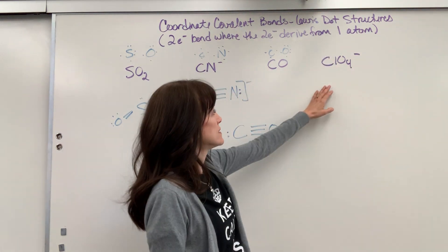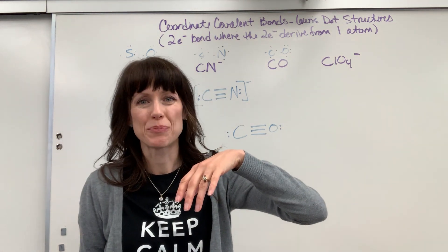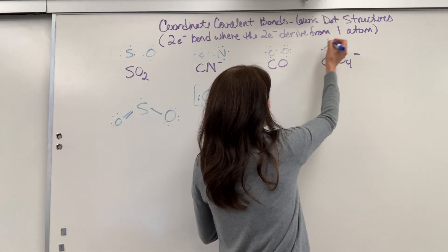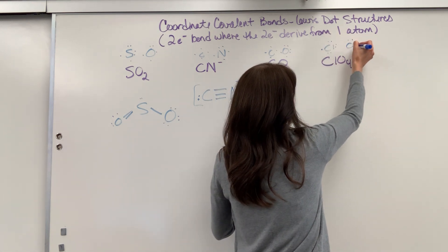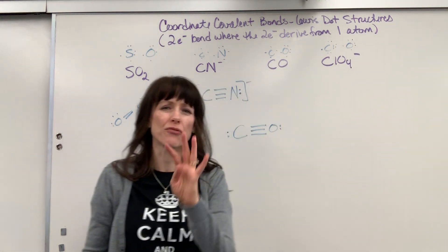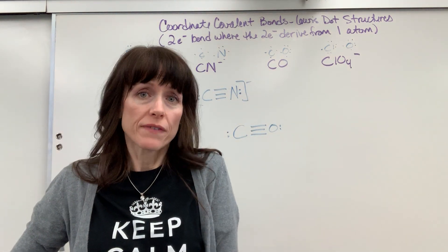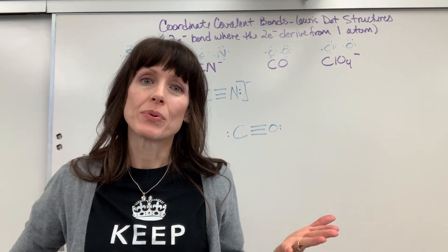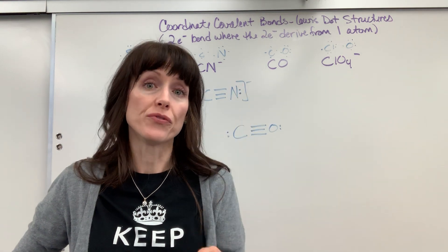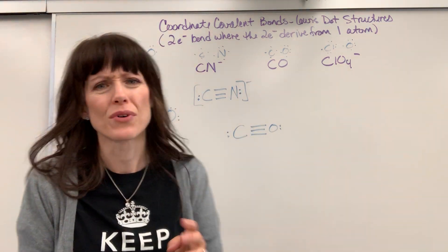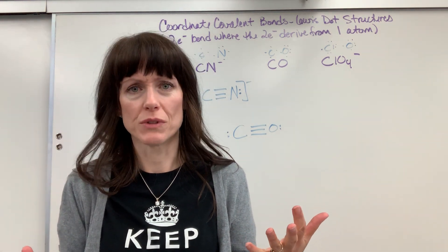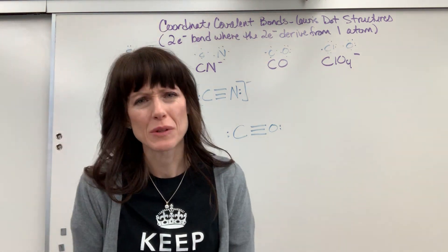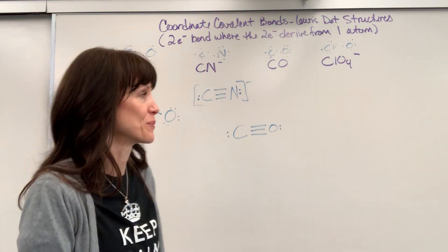One more example: perchlorate ion. Chlorine has seven valence electrons, oxygen has six valence electrons, and we have four oxygens. Rule of thumb: put the atom with the fewest valence electrons as the central atom. With four oxygens and one chlorine, the chlorine is going to be the central atom — and this does come from practice.